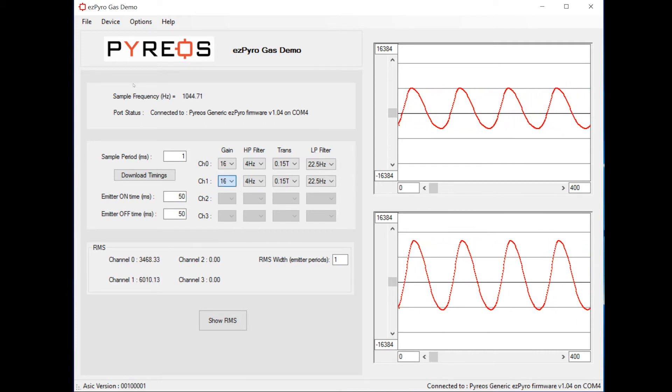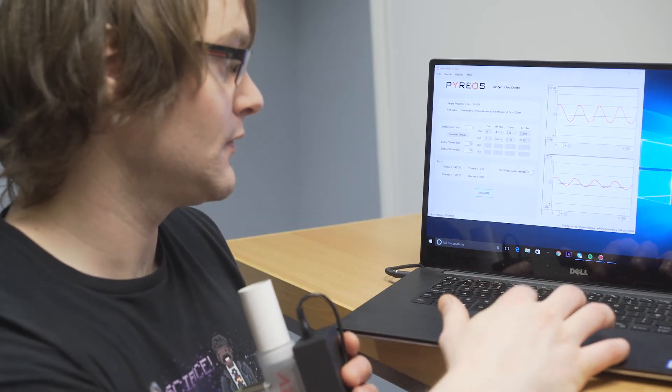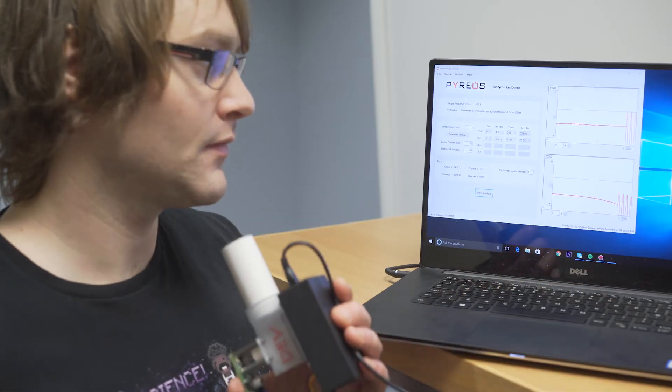For gases that require longer path length for absorption, the gain can be increased to compensate. The peak-to-peak of this signal is what we will be looking at in the following demonstration.